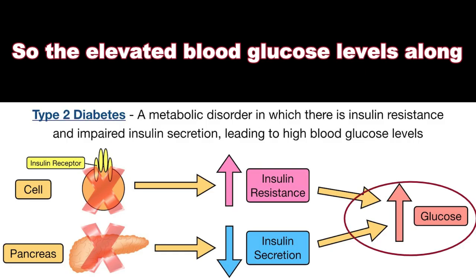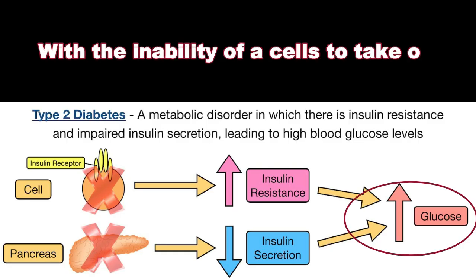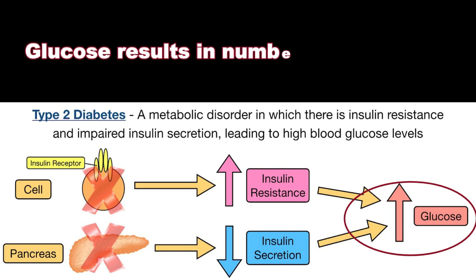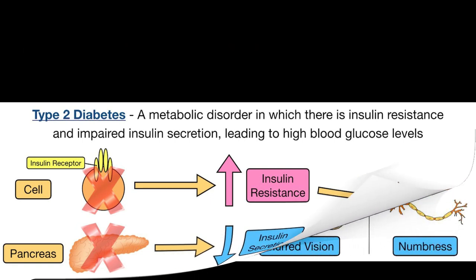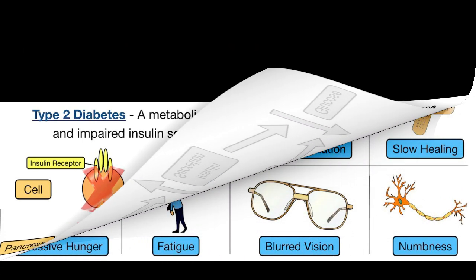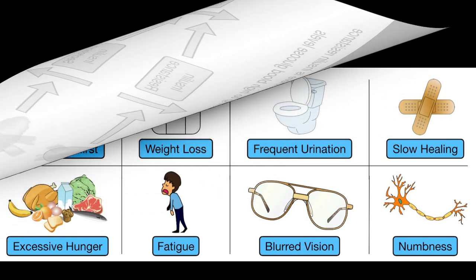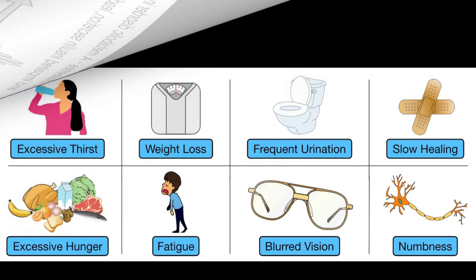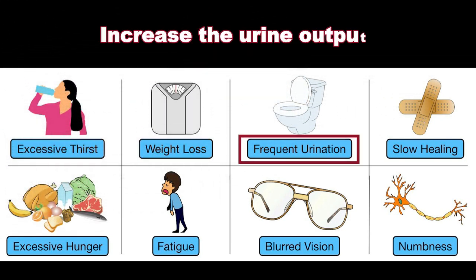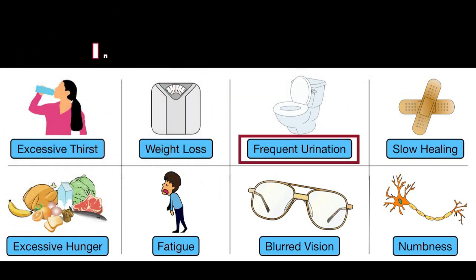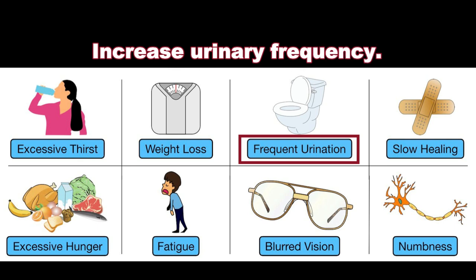The elevated blood glucose levels, along with the inability of cells to take up glucose, results in a number of symptoms. Let's talk about the signs and symptoms of type 2 diabetes. Number 1 is polyuria, which means increased urine output and increased urinary frequency.